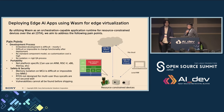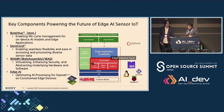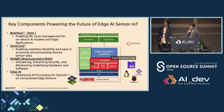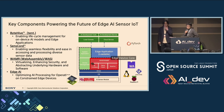We believe these four components are essential for the device side of the AI IoT system: lifecycle management, sensor control and data management, WebAssembly technology for security and cross-platform support, and edge AI inference. In the next part, we will introduce them in a bit more detail.